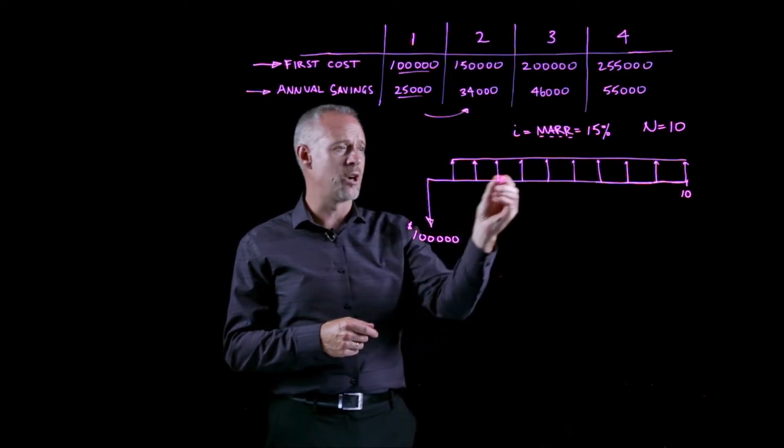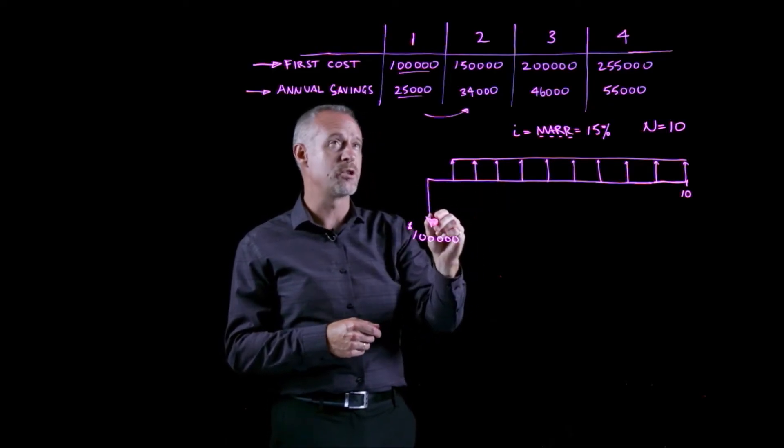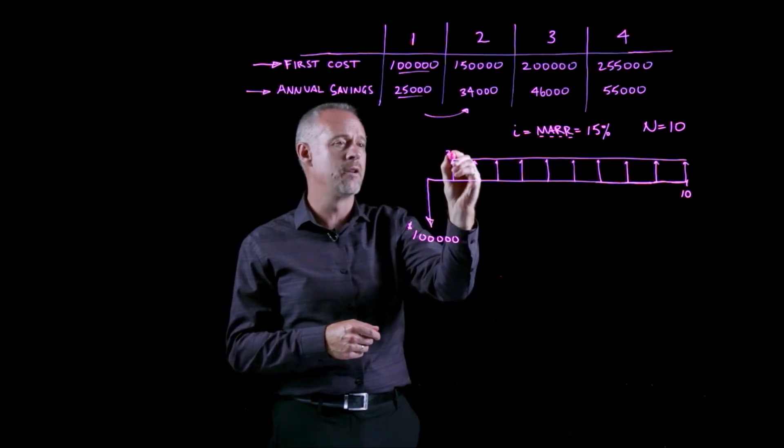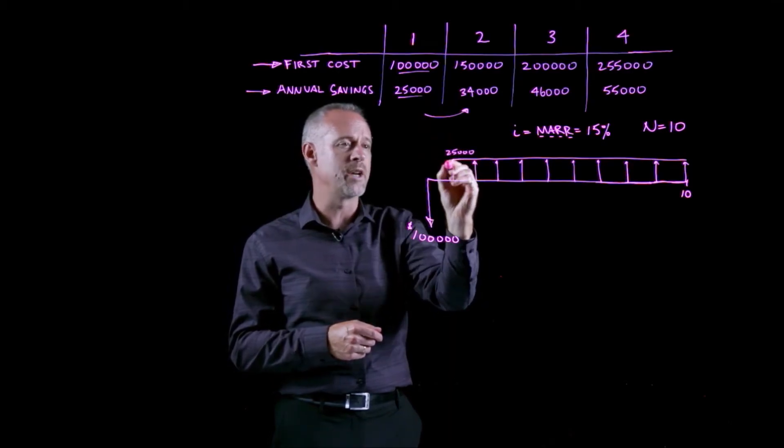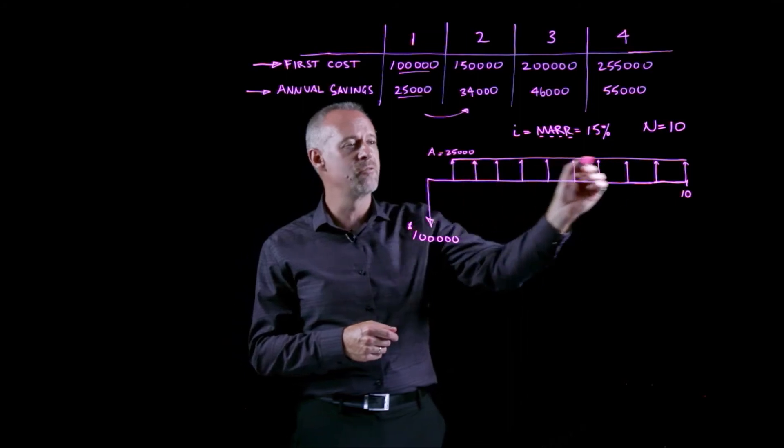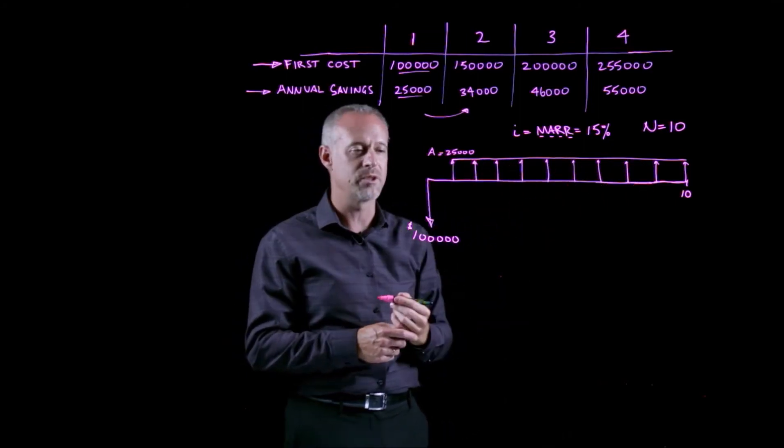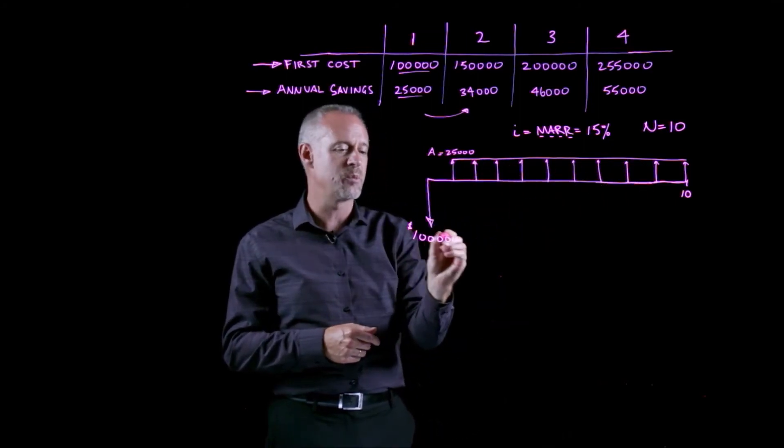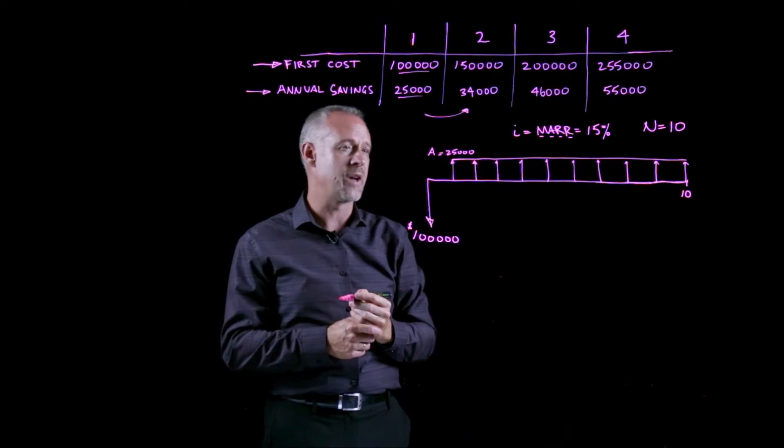So I won't draw this cash flow diagram for each of the alternatives. So for alternative one, the cash flow diagram would look like this, where the positive annuity is $25,000 for 10 years. And the initial investment is $100,000.